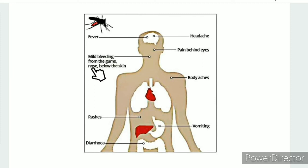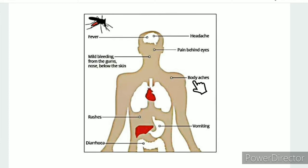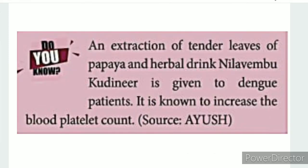Further dengue symptoms include mild bleeding from the gums, ear and nose, bleeding below the skin, body ache, rashes, vomiting, and diarrhea. An extraction of tender leaves of papaya, as an herbal drink, is given to dengue patients — tender leaves of papaya help increase platelet count.